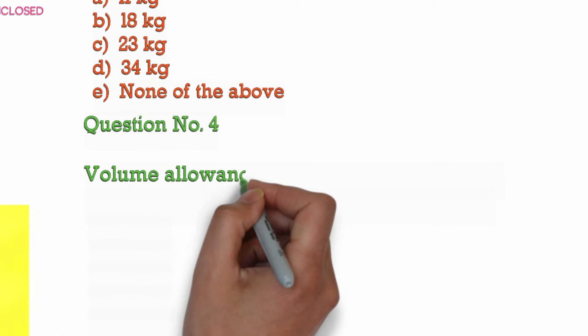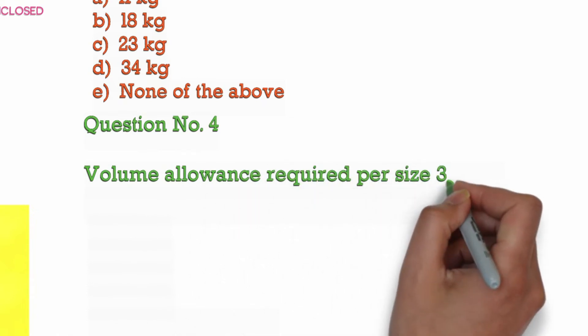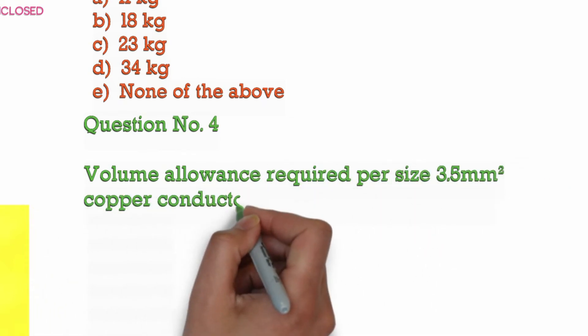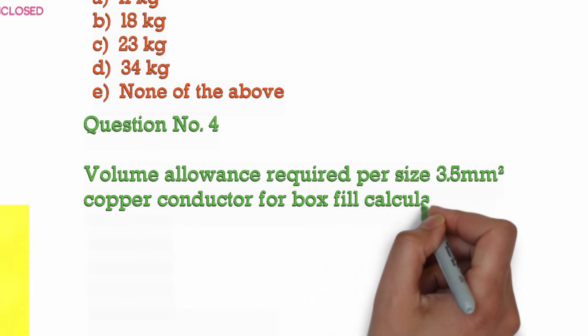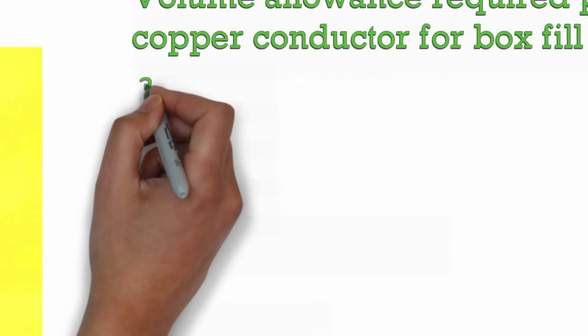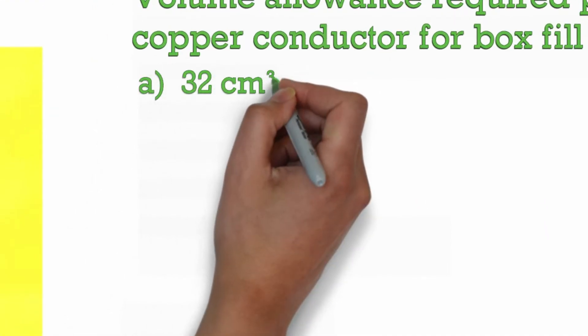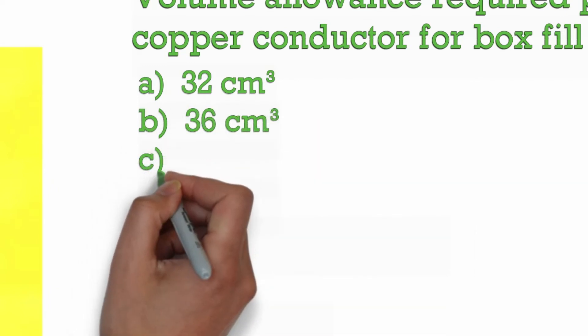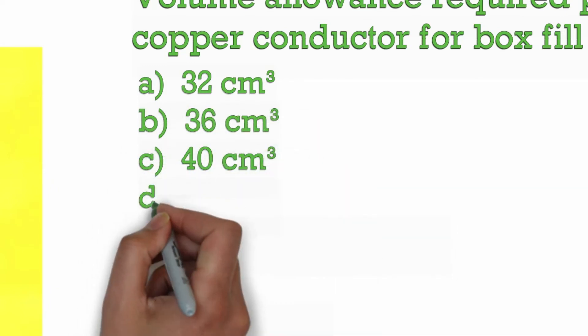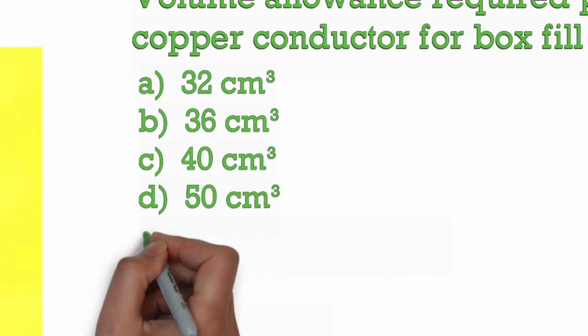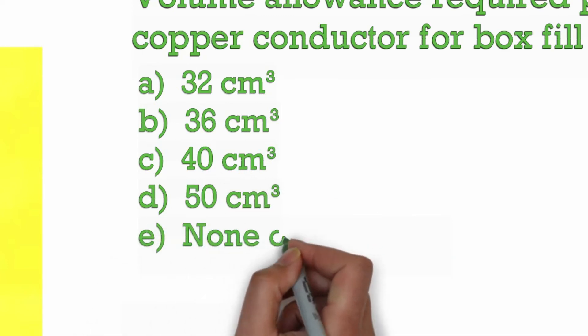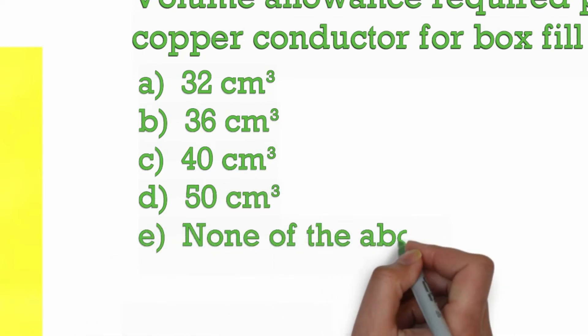Question Number 4: Volume allowance required per size 3.5 millimeter squared copper conductor for box fill calculations is: A. 32 cubic centimeter, B. 36 cubic centimeter, C. 40 cubic centimeter, D. 50 cubic centimeter, E. None of the above.